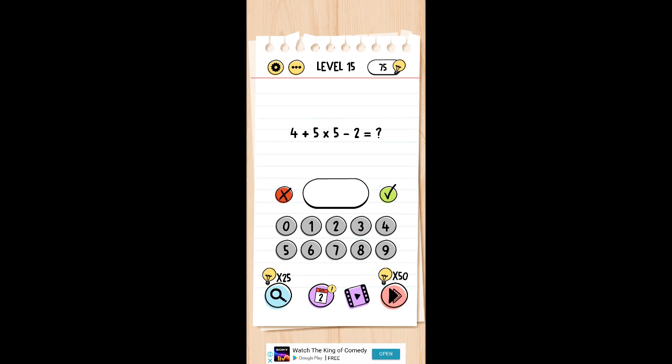And then addition and subtraction, they both have same priority. So 5 into 5, that is 25, and then you can either choose to add or subtract and the equation will result in the same number. So let's fix this.